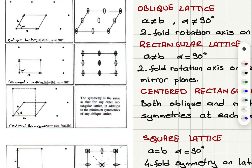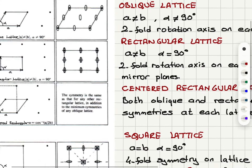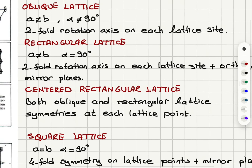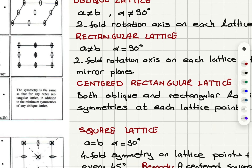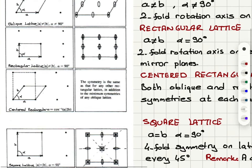In the centered rectangular lattice, the symmetry is the same as that for the rectangular lattice, in addition to the minimum symmetries of the oblique lattice. So both oblique lattice and rectangular lattice symmetries are present at each lattice site. It's just the rectangular lattice with another lattice site in the middle.